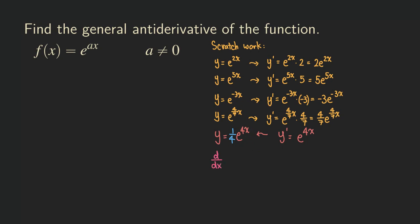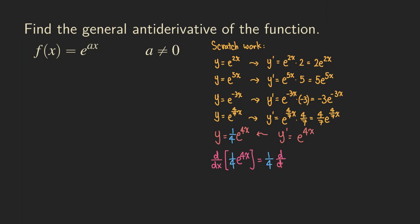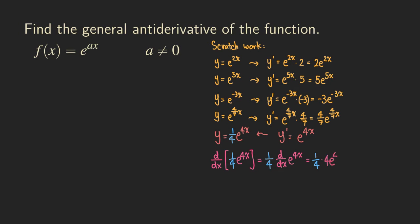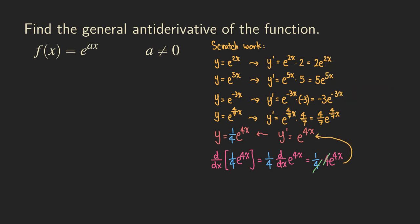By the constant multiple rule, we don't need to worry about the 1 over 4 — we're just taking the derivative of e to the 4x. We still have that 1 over 4, and the derivative of e to the 4x gives 4e to the 4x. The 4 cancels with the 1 over 4, and we get e to the 4x. So they are equal.